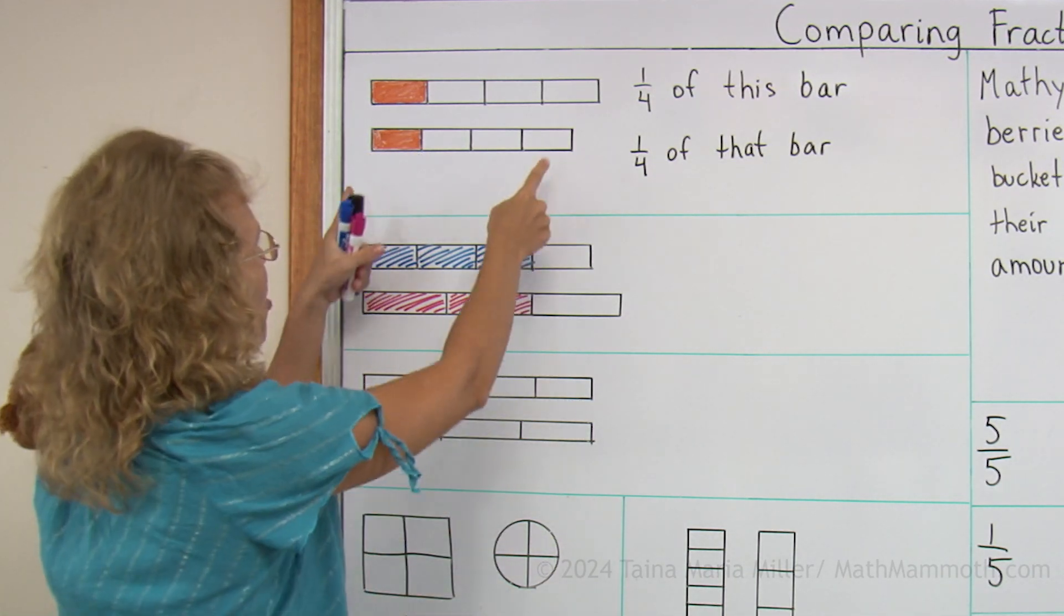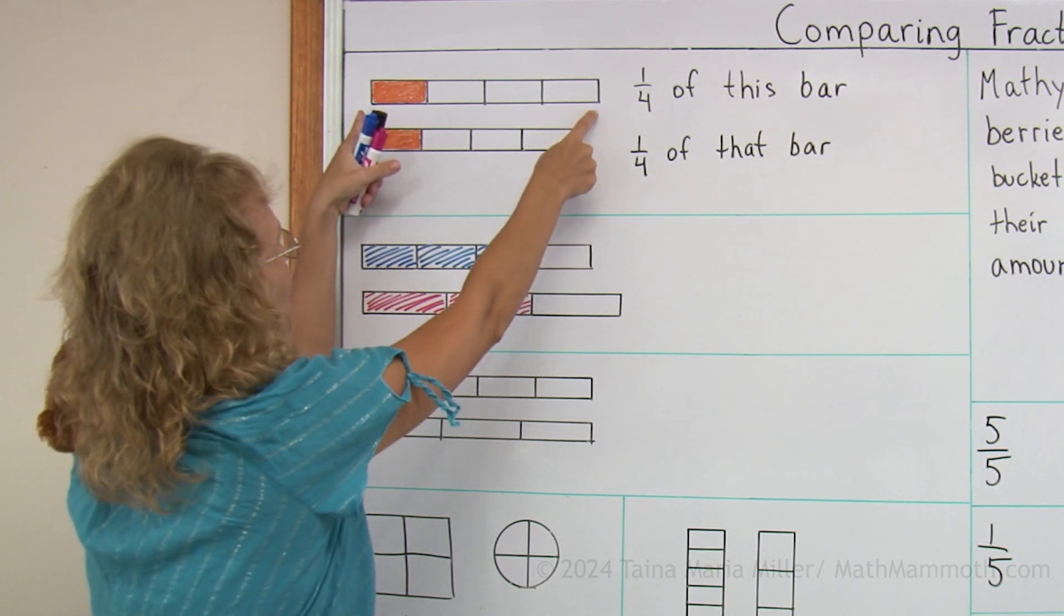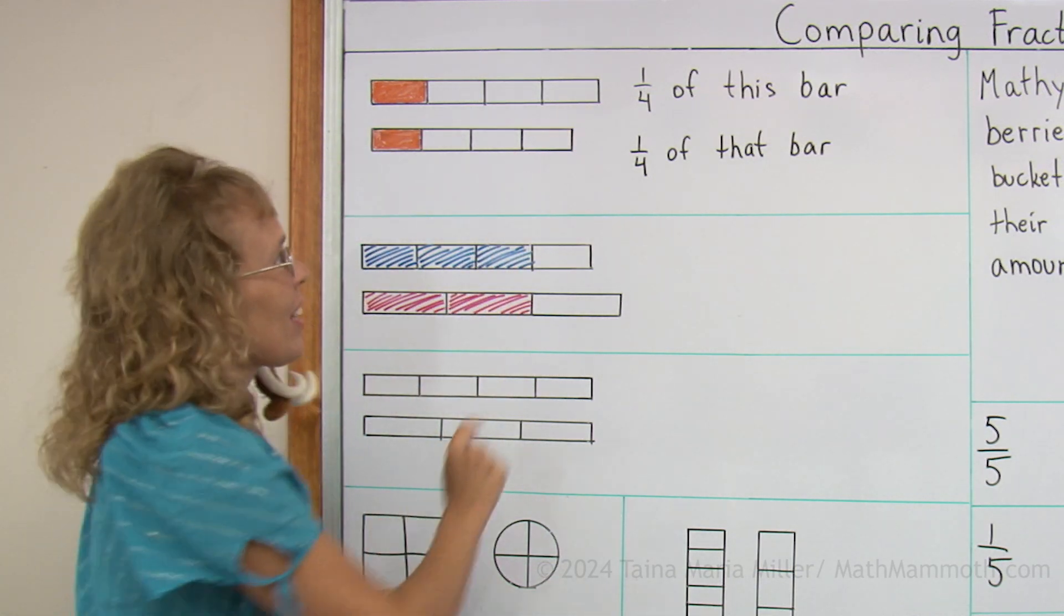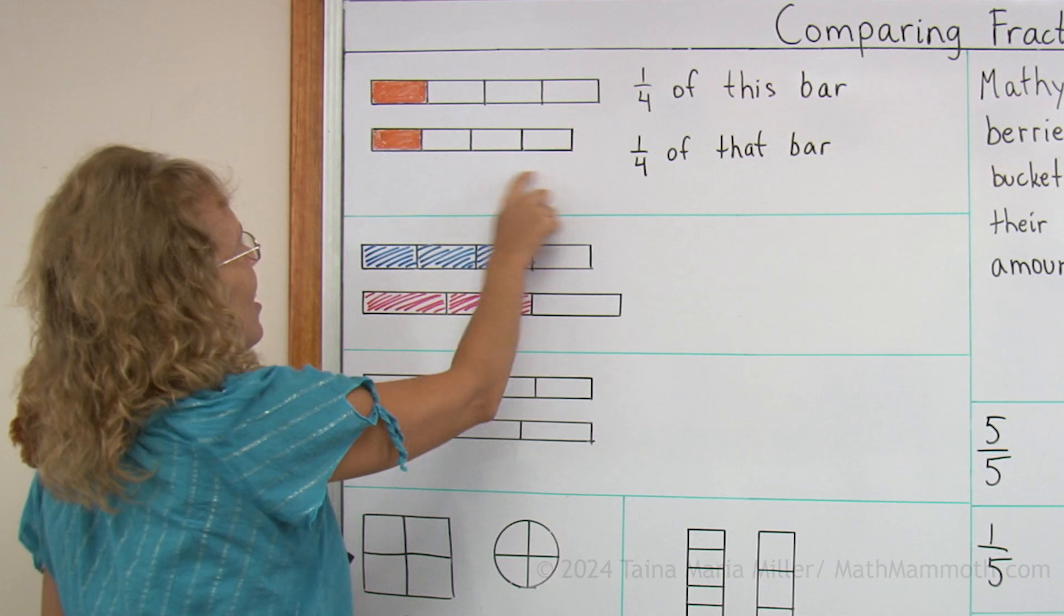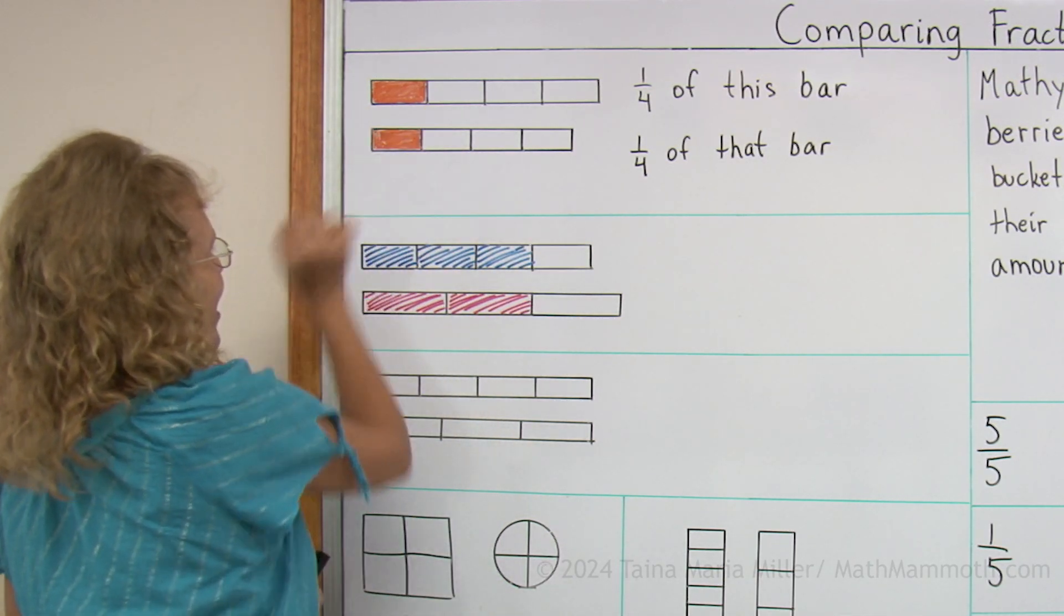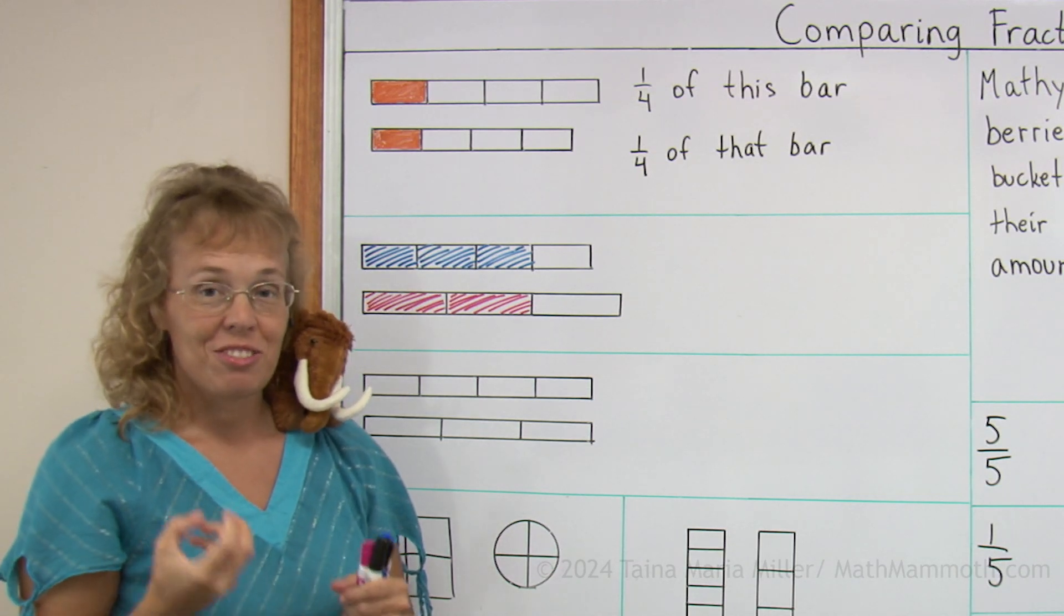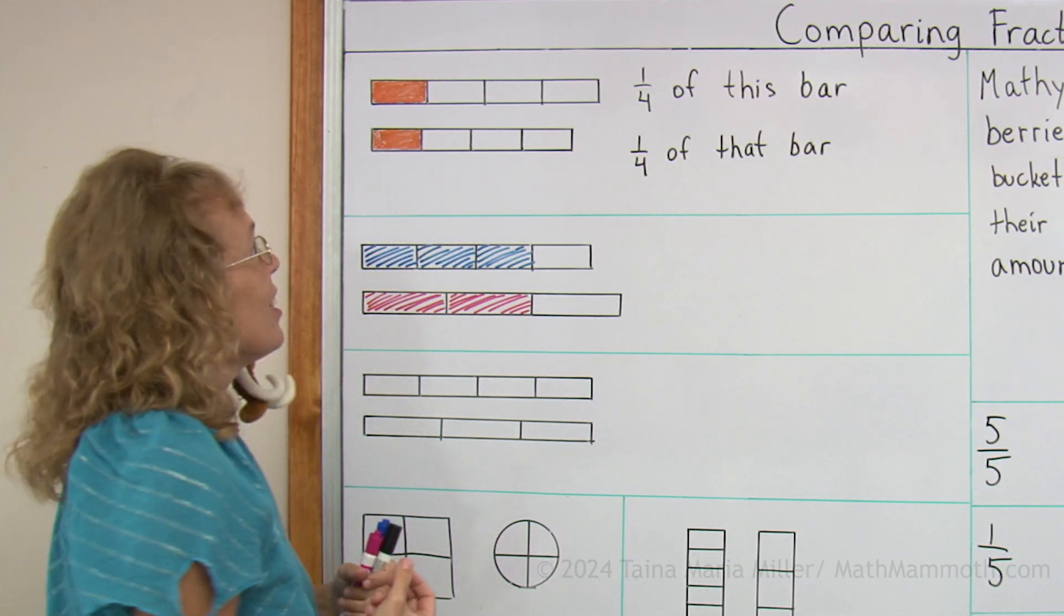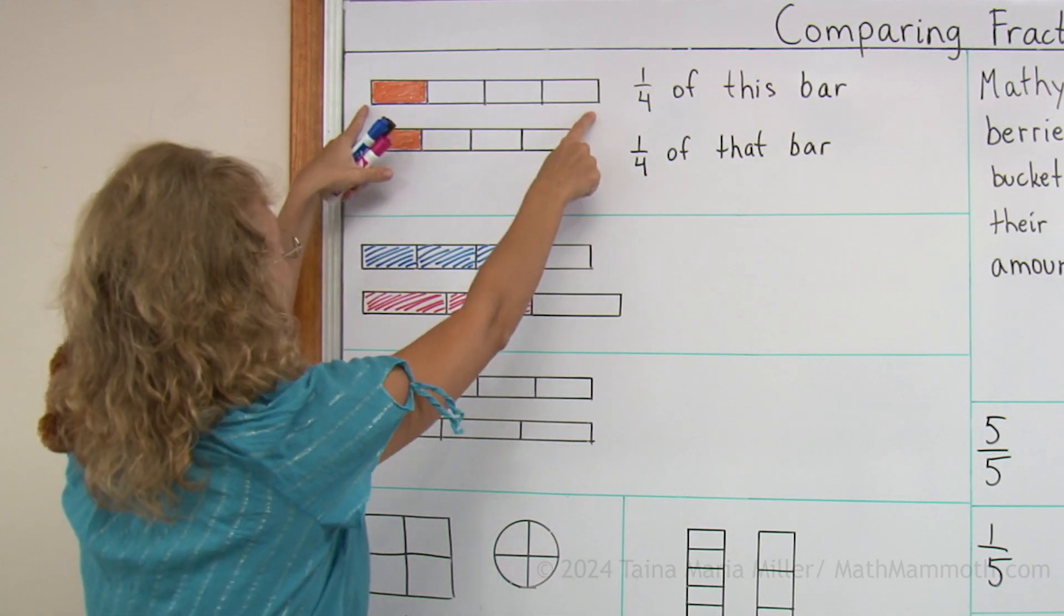As you can see, this fourth is a bigger piece than this. The problem is our wholes are not the same size. This fraction bar is longer than that. So indeed, this piece is bigger than that. But they are not referring to the same fraction bar. They are not the same length to start with.